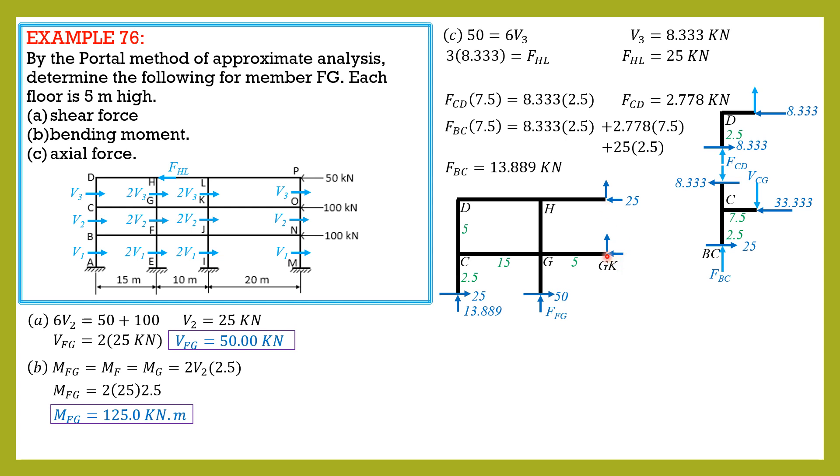Then if we sum up moment about GK, this shear force is not involved, it passes through this point. So clockwise positive, summation moment about GK equals zero. So FFG times 5 plus 13.889 times 20 equals 50 times 2.5 plus 25 times 2.5 plus 25 times 5.